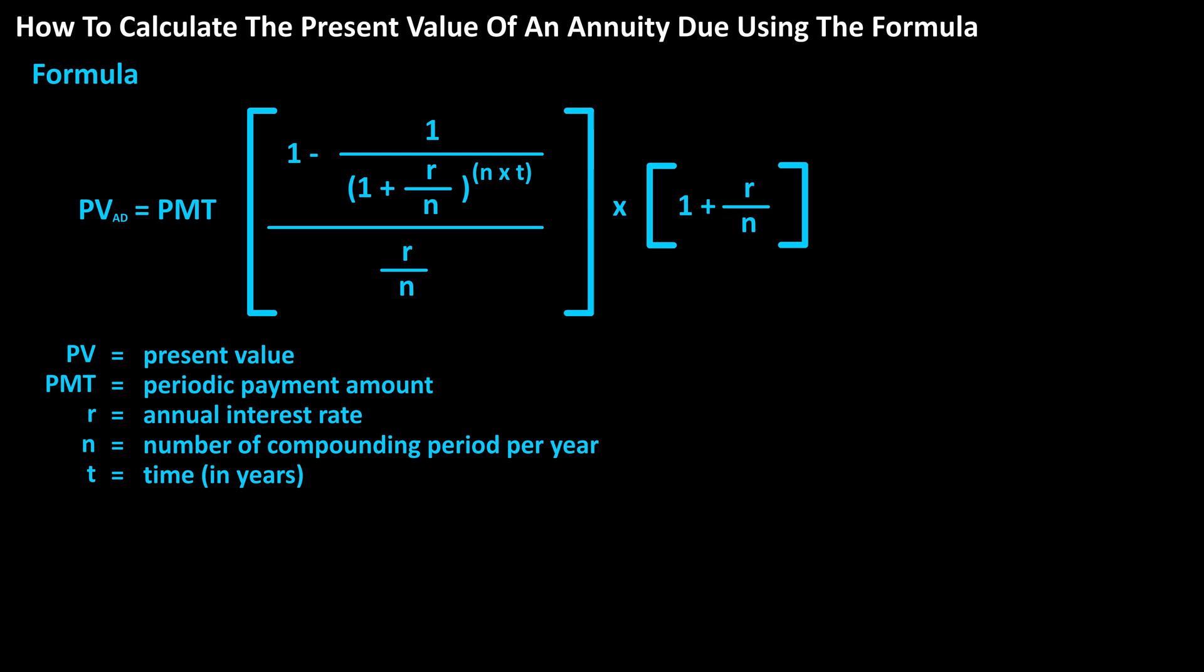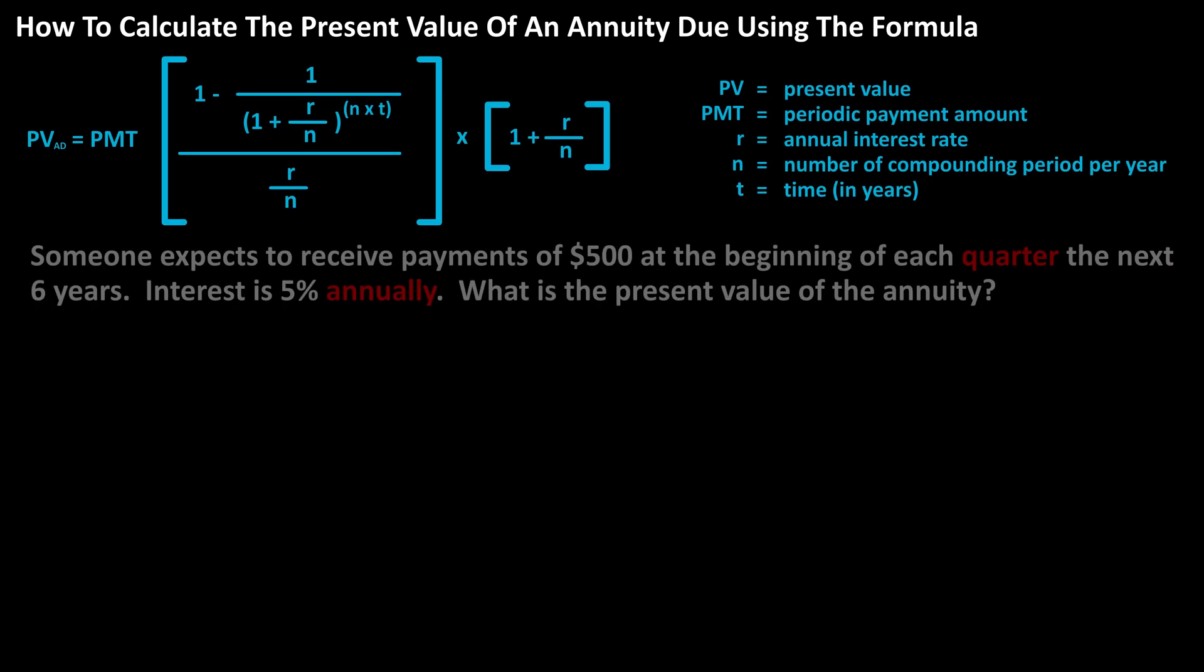Here is the formula and a list of all the variables. As an example, let's say that someone expects to receive payments of $500 at the beginning of each quarter for the next six years. Interest is 5% annually, and since the payments are received at the beginning, this is an annuity due. What is the present value of the annuity?